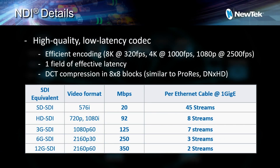What does an SDI signal look like, and what does that look like in NDI from megabits per second? How many signals can you get per cable? Looking at something that's 12G, we can get two streams per one gigabit cable at 4K 60p. That's in a one gigabit network. If we upgrade that to a 10 gigabit network, we just add a zero to all these numbers.